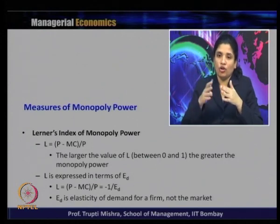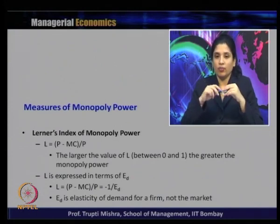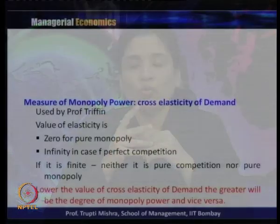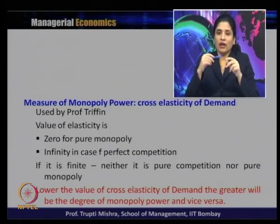The Lerner Index can be expressed in terms of elasticity of demand: L = −1/E_D, where E_D is the elasticity of demand for the firm. L equals 0 for a perfectly competitive firm and 1 for a pure monopoly, with oligopoly and monopolistic competition in between. The second measure of monopoly power is cross elasticity of demand, used by Professor Treffin. Here the value is 0 for pure monopoly and infinity for perfect competition.